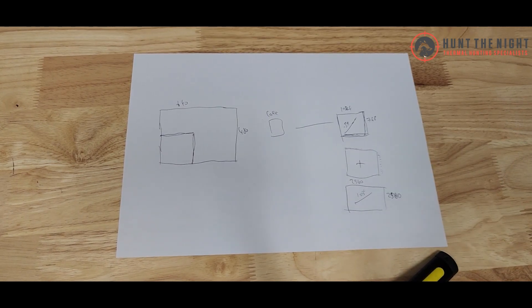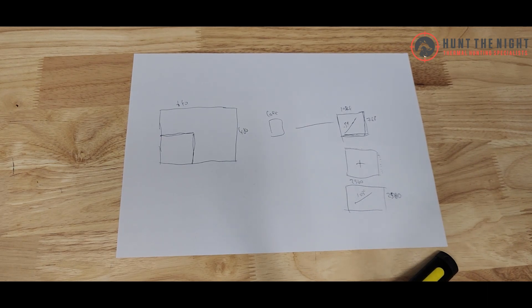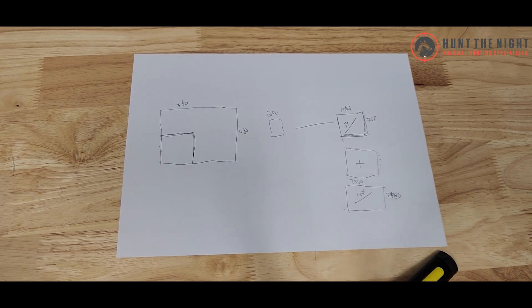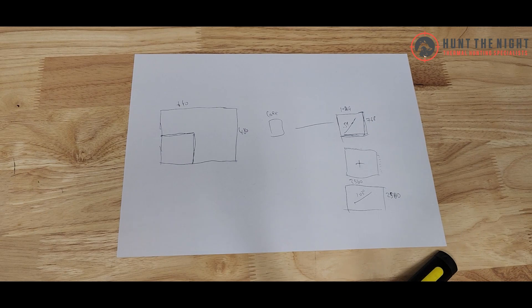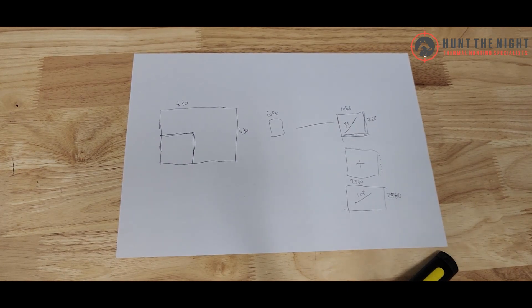So guys, that's basically how it works. That's the base. Now, again, there's going to be other influences in terms of software and reticles and so on. But in a like for like scenario, a 384 sensor is going to give you a more accurate zero than a 640 sensor. Anyway, there it is guys. There's some information.